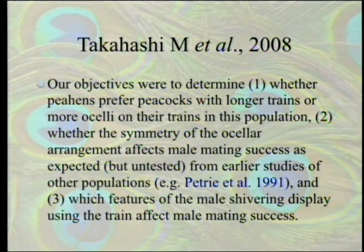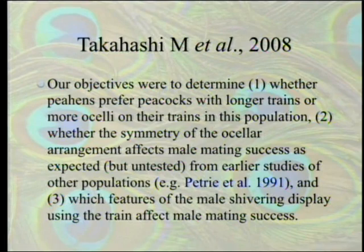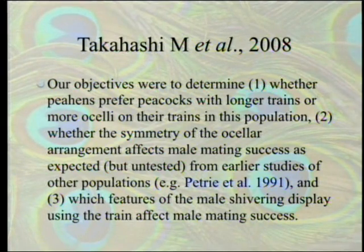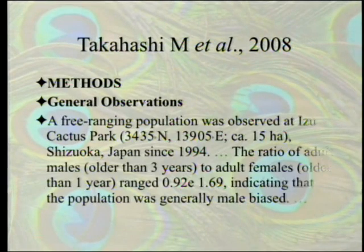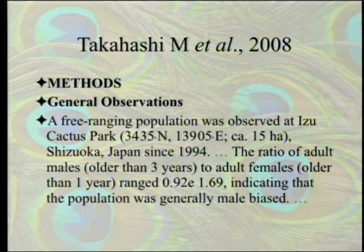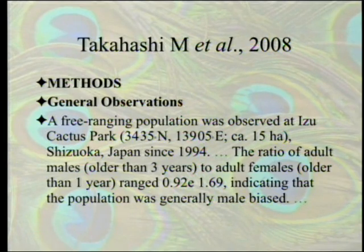They also investigated which features of the male shivering display affect male mating success — looking not only at the eyes but also at a behavioral element, shivering, which you saw in that video. A free-ranging population was observed at Izu Cactus Park in Shizuoka, Japan, since 1994 — the study ran for seven years, though they actually quit observing around 2000, then wrote it up, and finally got it published in 2008. Nobody wanted to hear this.